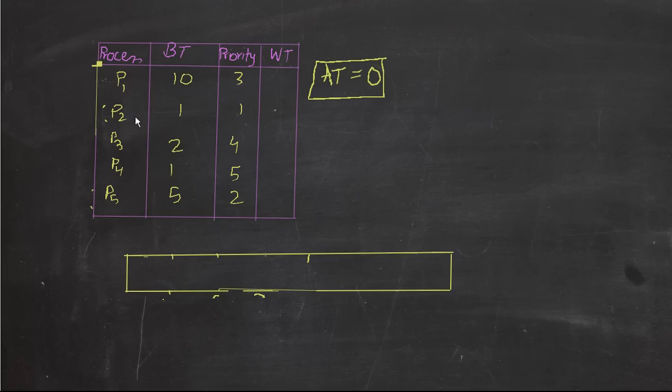As you can see that there is no arrival time given here. Even in the first come first serve algorithm there wasn't supposed to be an arrival time but you can give an arrival time and it doesn't really matter. Whenever there is no arrival time given it usually means that AT equals to zero, that is arrival time equals to zero, which means that all these processes,